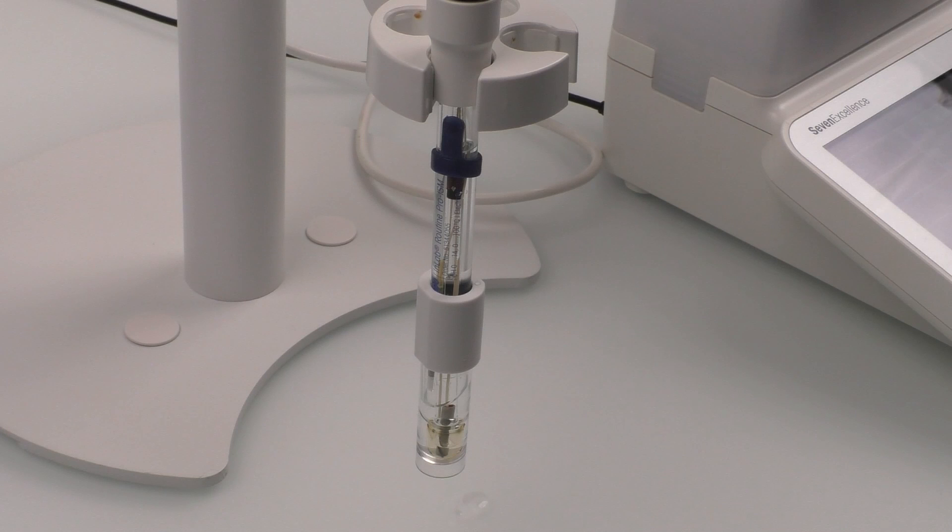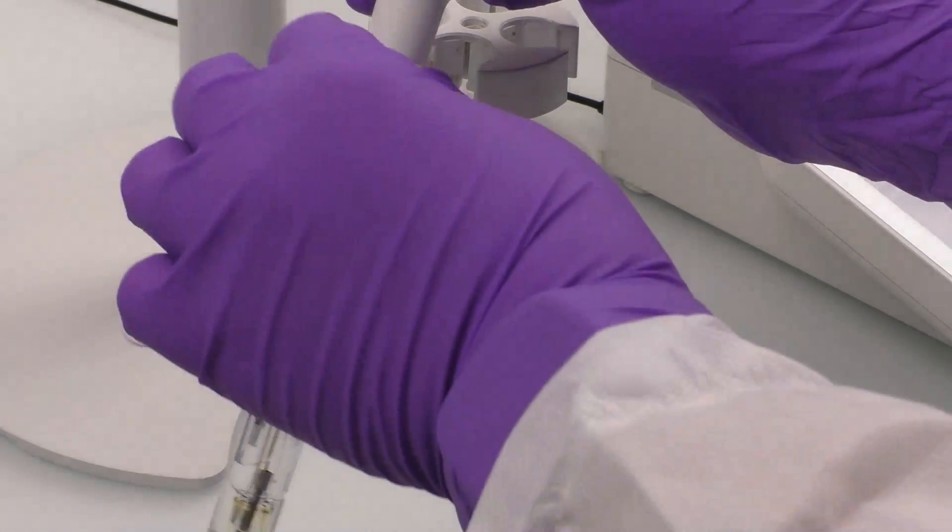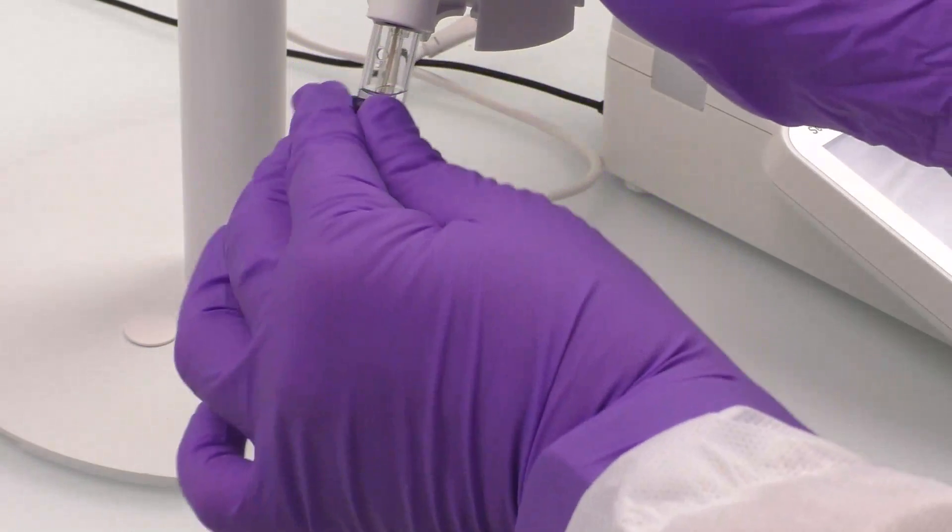Let's get started with preparing the pH sensor for calibration. To ensure accurate results, sensor preparation steps need to be taken before calibration or verification. We will be using an in-lab Pro-ISM sensor for this demonstration. First, you need to open the safety lock so that the electrolyte can flow into the sample.